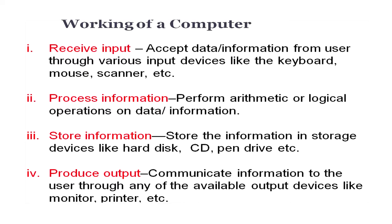In the course of processing, we need memory to store data, so the CPU is in direct connection with memory registers. To see the results of the processing, we have the output unit. Output devices such as monitors, printers, and plotters help us to see the results. In summary, the working of a computer involves: receiving input from the user, processing through arithmetic and logical operations, storing information in memory devices like hard disks, CDs, and pen drives, and finally communicating the output through output devices like monitors and printers.